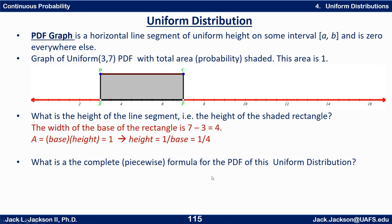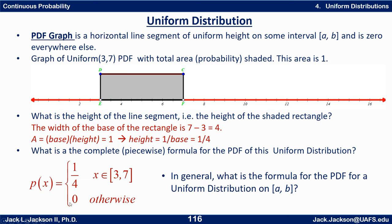So what's the complete formula for this? Well, it's a piecewise defined formula. It's p(x) or PDF of x equals one-fourth for x's between three and seven inclusive, but it's zero otherwise.